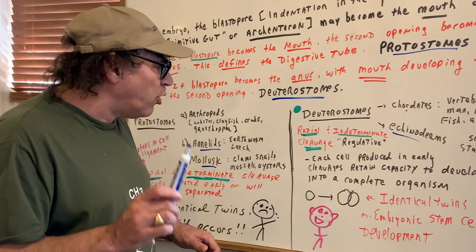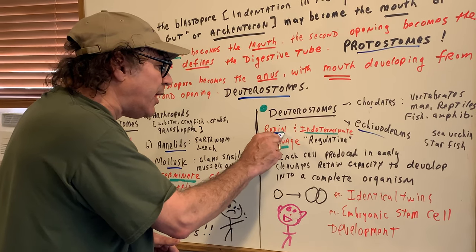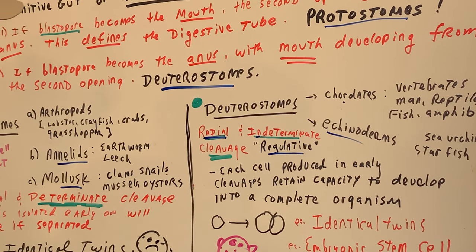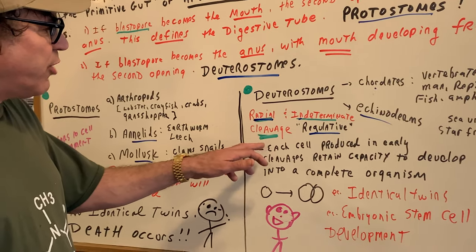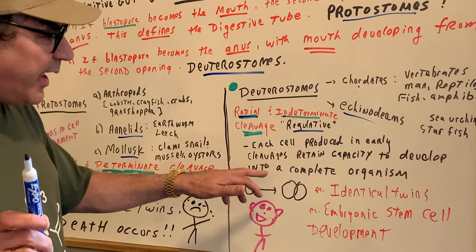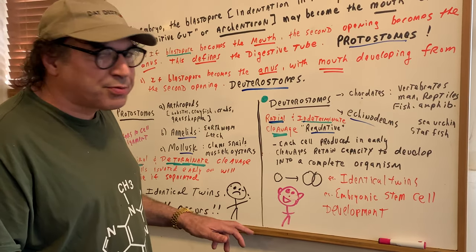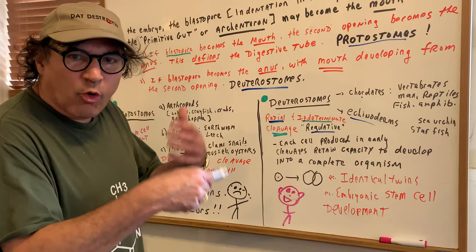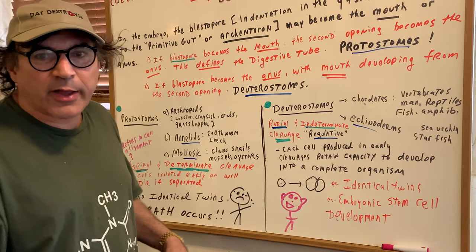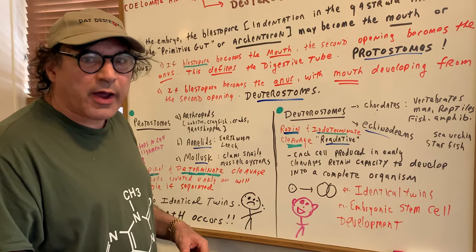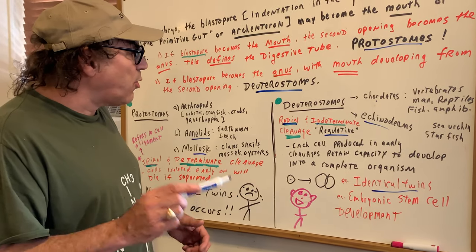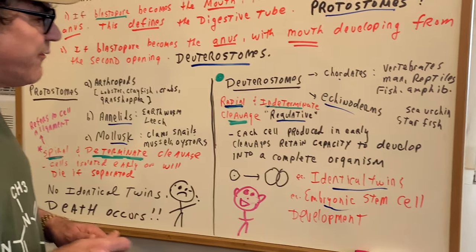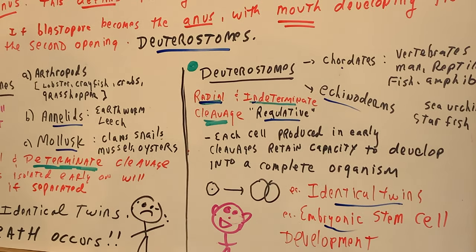In a deuterostome, the cleavage is said to be radial and indeterminate — sometimes older textbooks called it regulative cleavage. In an indeterminate cleavage, each cell produced in the early cleavages retains the capacity to develop into a complete organism. So if you have one cell, it divides, and at the two-cell or four-cell stage, if you do separate them, they can keep developing and don't die — they form a viable organism. A great example is identical twins. Embryonic stem cell development is also important in indeterminate cleavage.